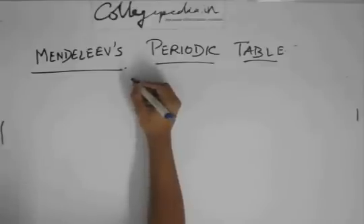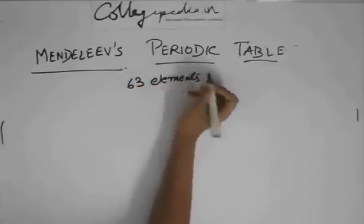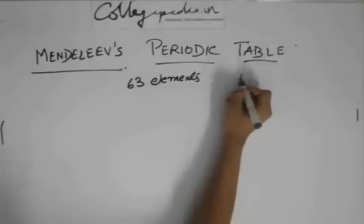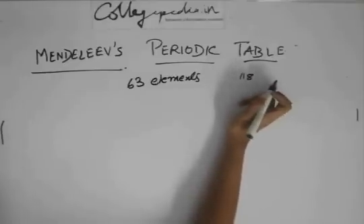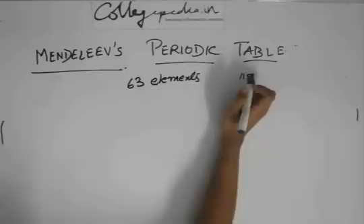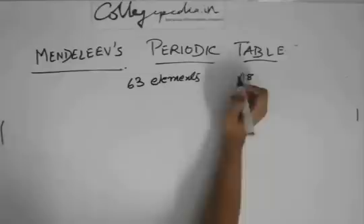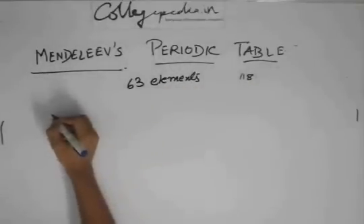Now at the time of Mendeleev, 63 elements were known. And now 118 are known. So what Mendeleev said, he carried on Newland's law of octaves but with modifications. He created his law, Mendeleev's periodic law.